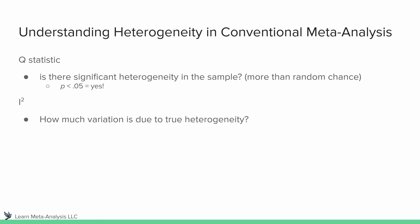Next, we have our I-squared value. This is essentially asking how much variation is due to true heterogeneity. We interpret this by percentages: 0 to 25% is low, 25 to 50% is moderate, 50 to 75% is substantial, and 75 to 100% is considerable.